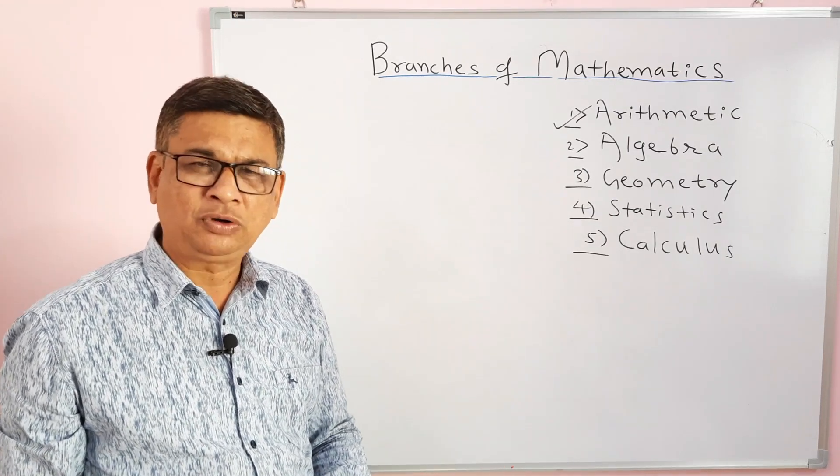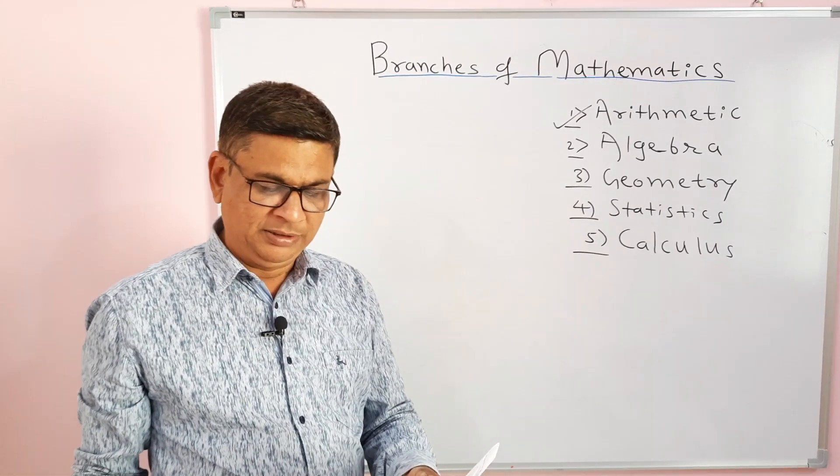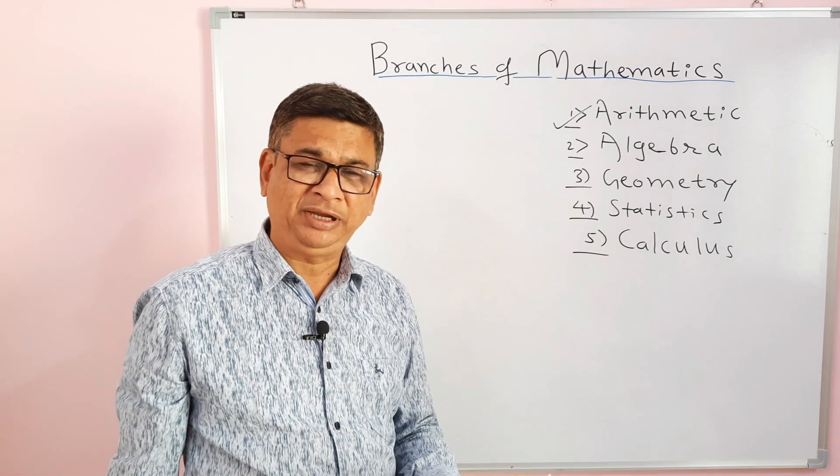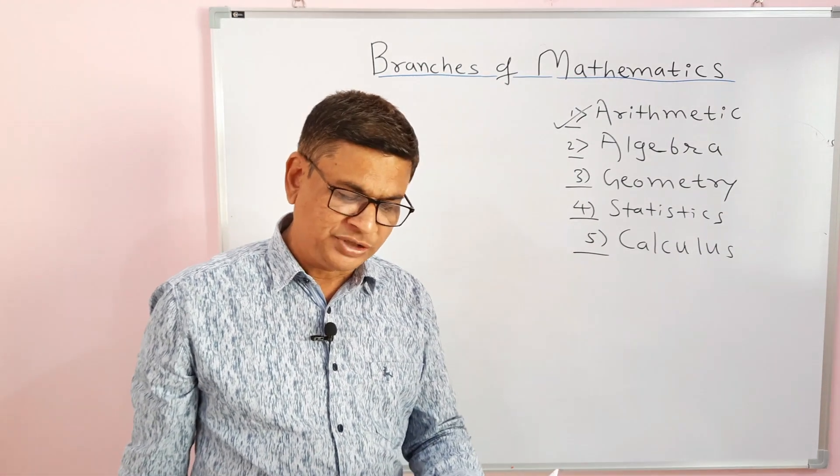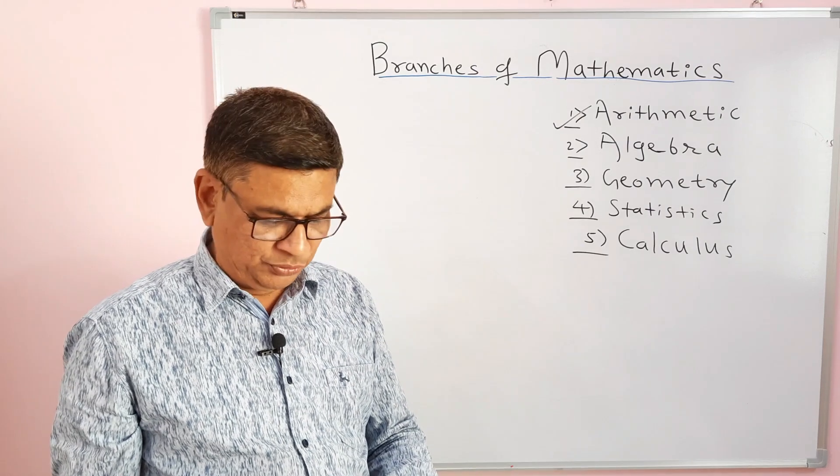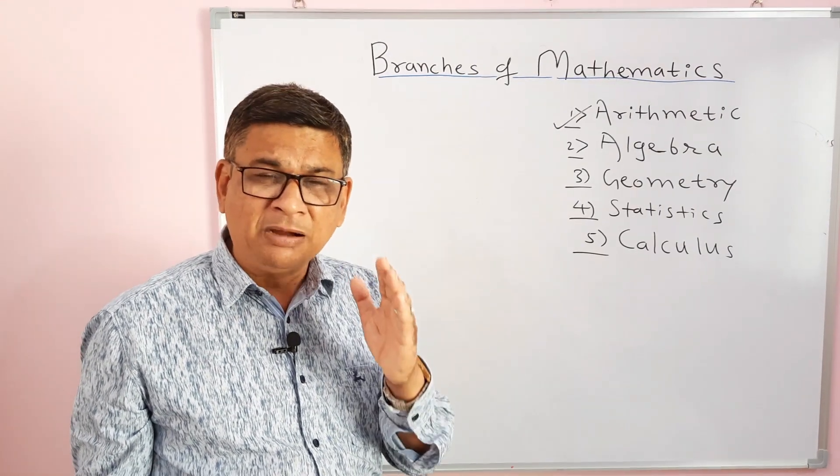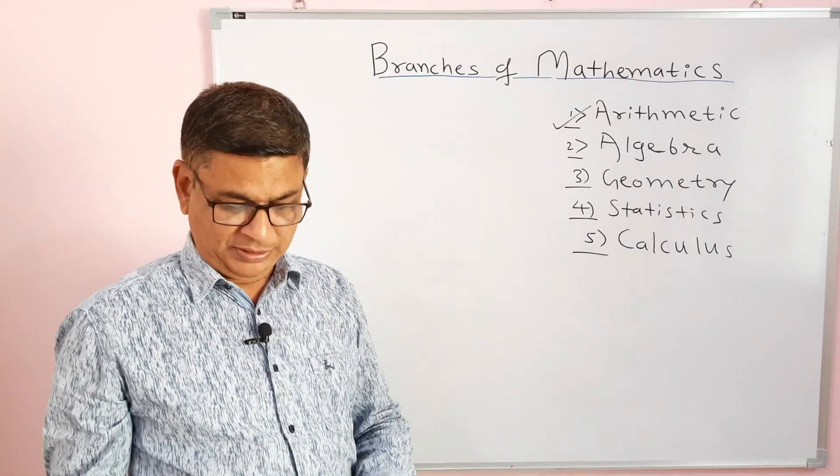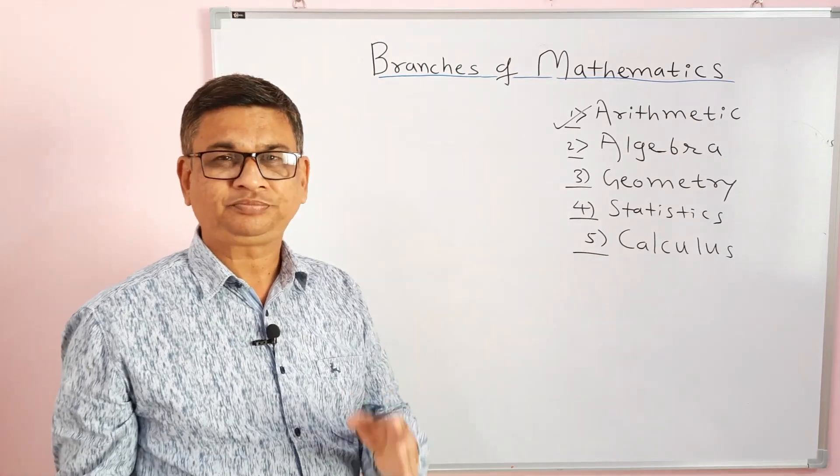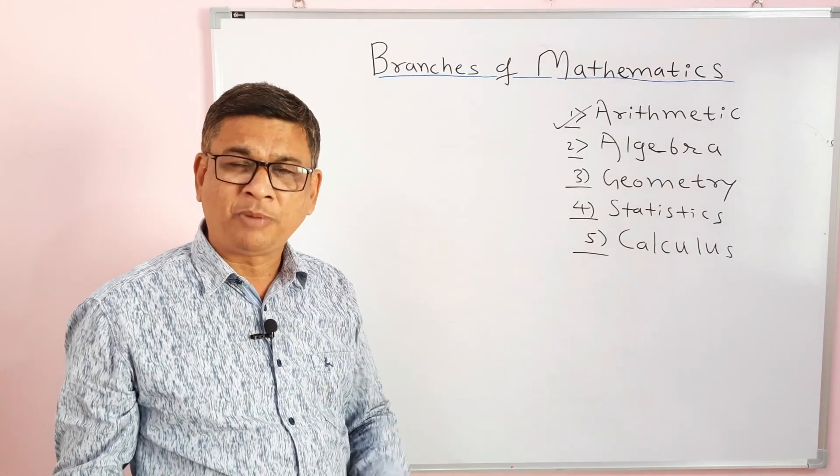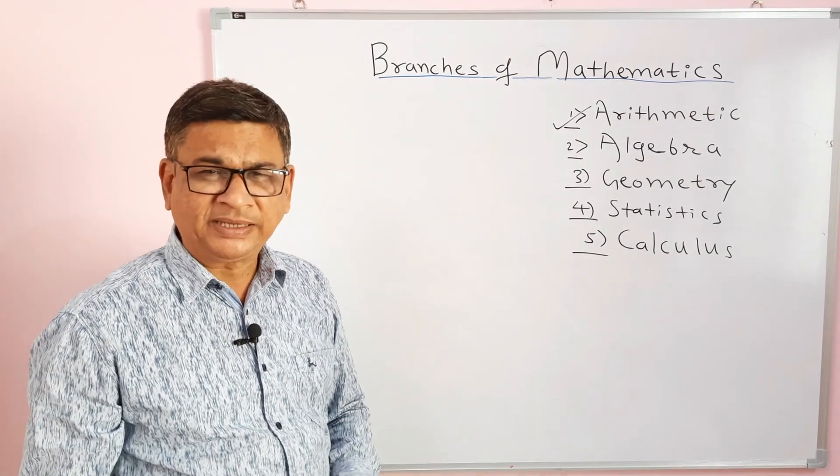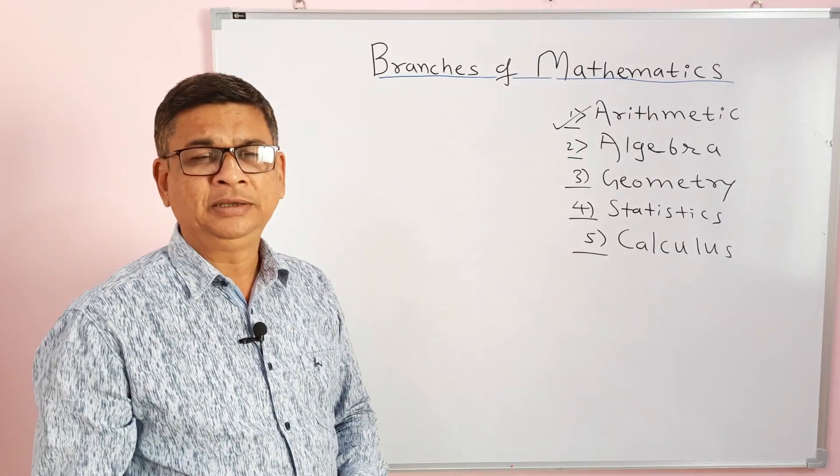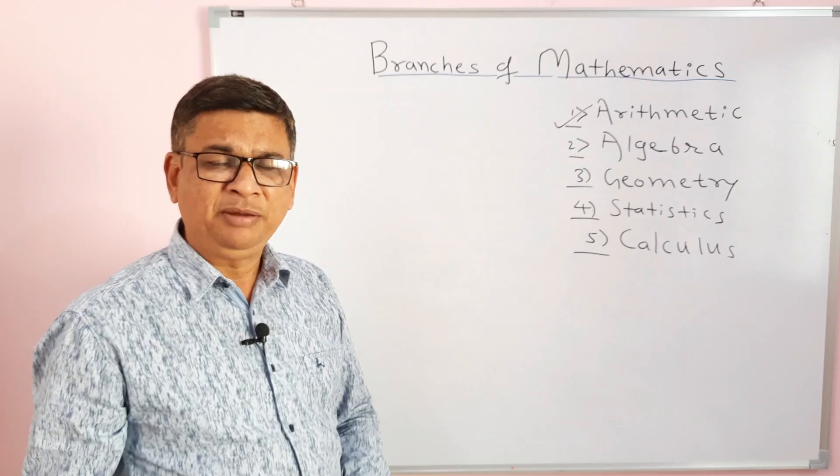Like indices, also called exponents, then rational and irrational numbers, that is the special type of real numbers, square roots and cube roots, squares and cubes, simple and compound interest calculation. Then it is also percentage, profit, loss, etc. All these topics are studied in the very basic and important branch of mathematics, that is arithmetic.